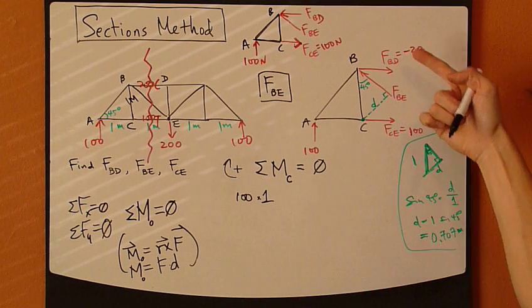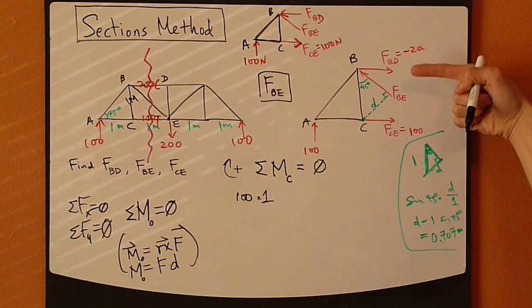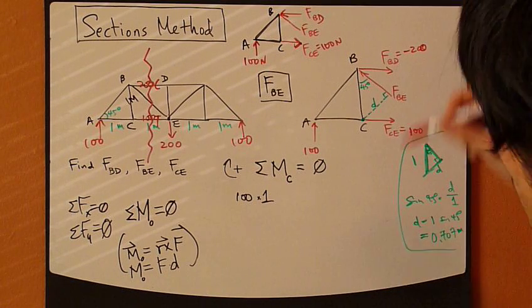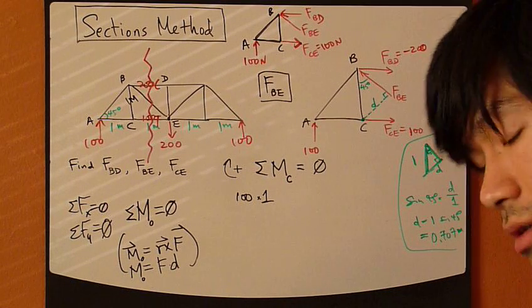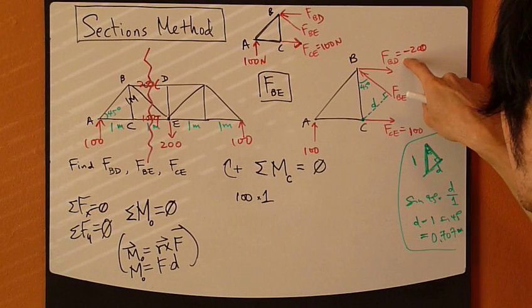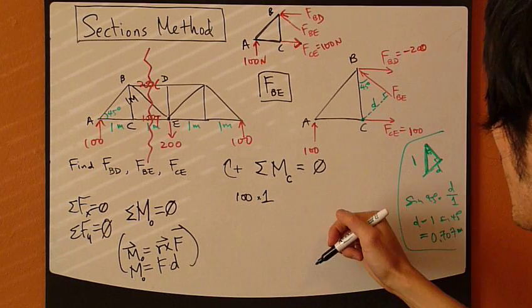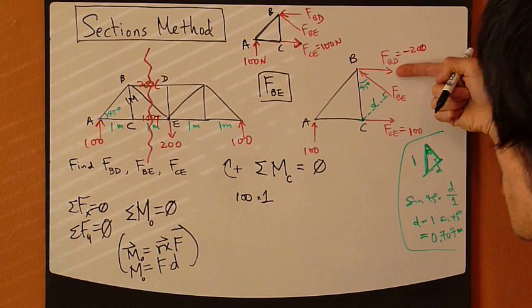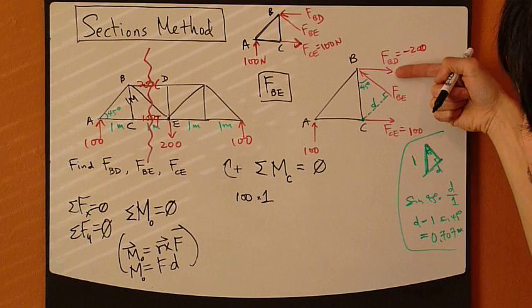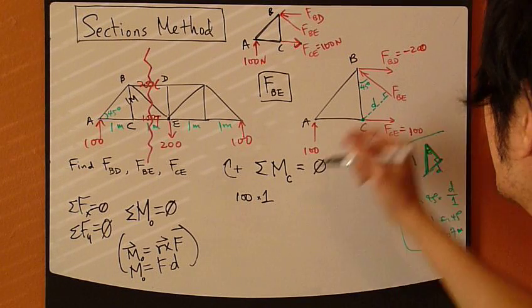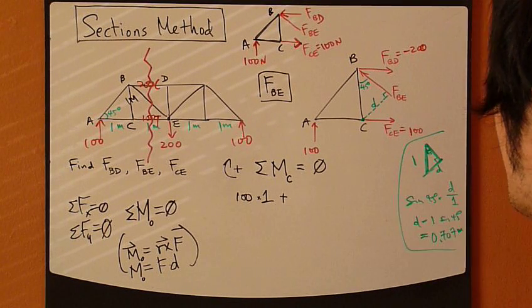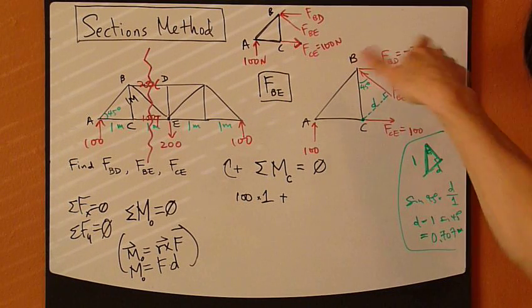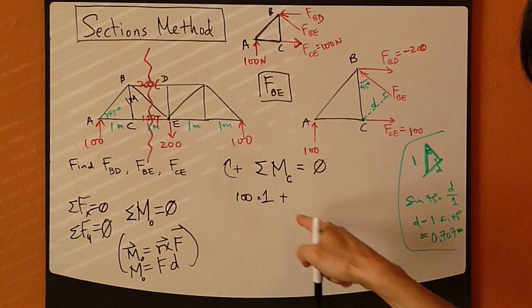Next, BD. Now BD is negative 200, so let's just use the result here. You can keep this direction, that's fine, it's the assumed direction, the wrong direction. BD about C, according to this wrong direction, is a positive moment, clockwise, so positive.